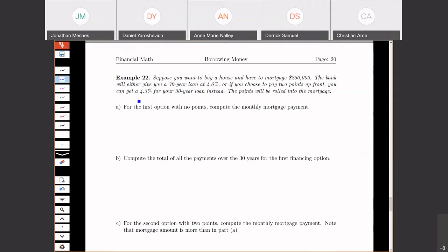What we're going to do is first look at this first option and compute everything. So the first option with no points, compute the monthly mortgage payment. My principal or present value is $250,000. The interest rate is 4.6%. It's 30 years and monthly payments.